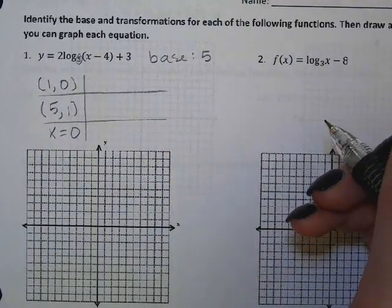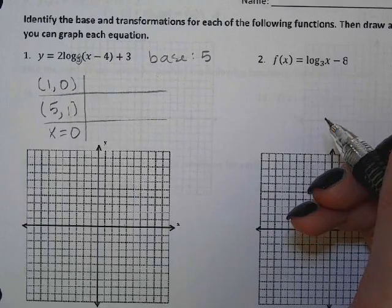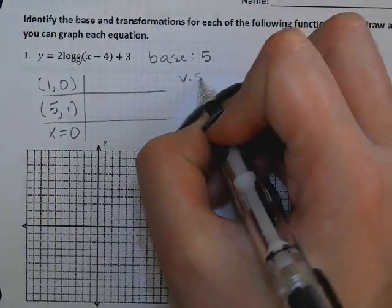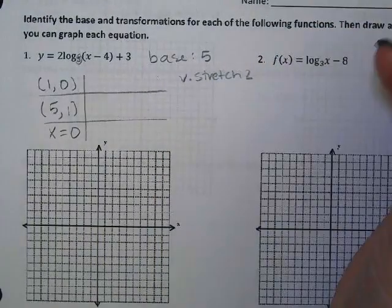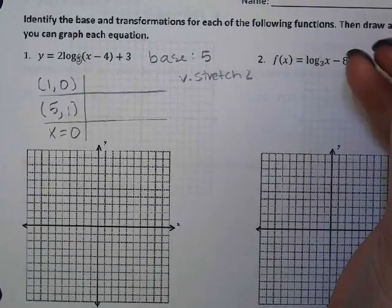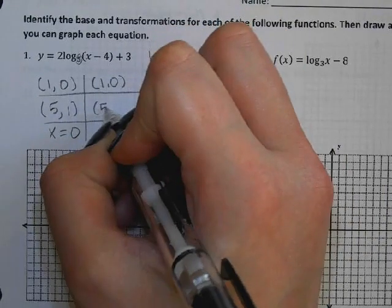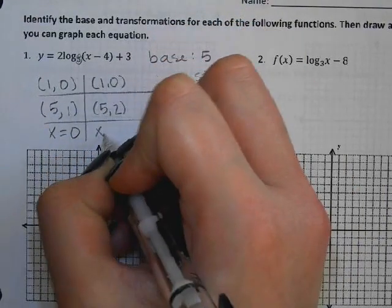Okay, so what's the first transformation we see? Okay, so vertical stretch of 2. And what do we multiply by 2? The y. So we've got (1,0), (5,2). Vertical asymptote will not have changed.